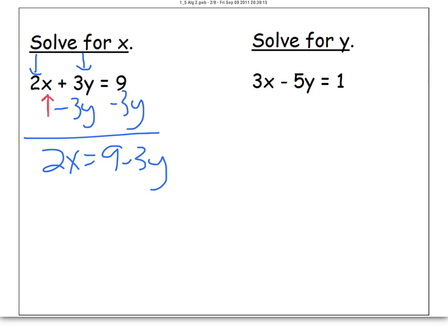To get rid of the 2, which is times by the x, I'm going to divide every piece by the 2. So I'm left with x equals 9 over 2 minus 3y over 2.